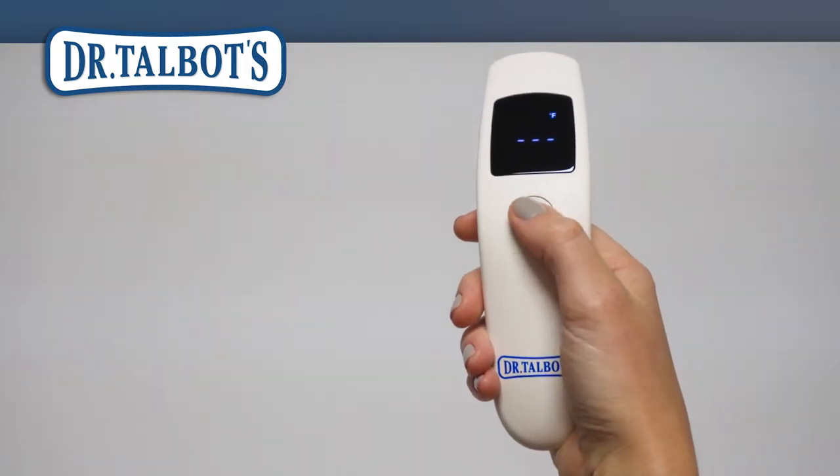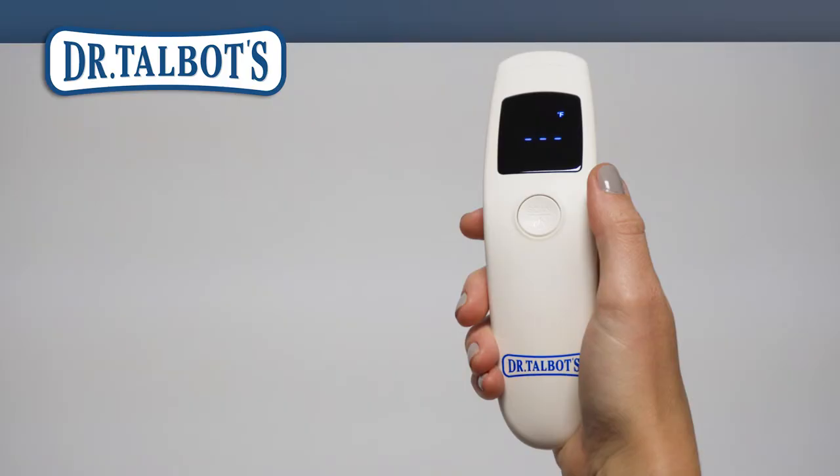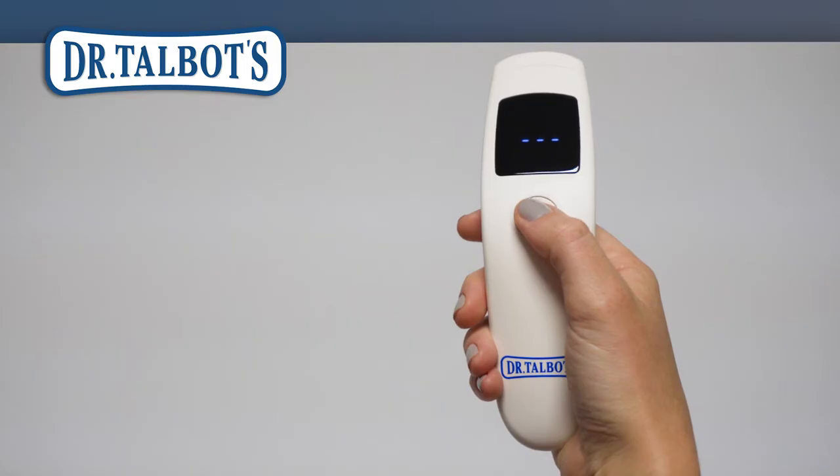Press the button again to change the displayed measurement scale to the measurement of your choosing. The measurement scale will be displayed on the top right side of the display screen. Choose F for your measurements to display in Fahrenheit or C for your measurements to display in Celsius.